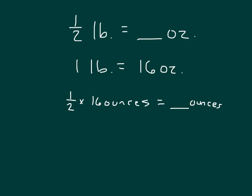And so we have one half times 16, which is the same as 16 over 2 ounces, which we can evaluate to 8 ounces. So a half a pound does equal 8 ounces.